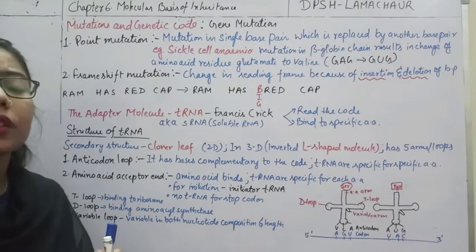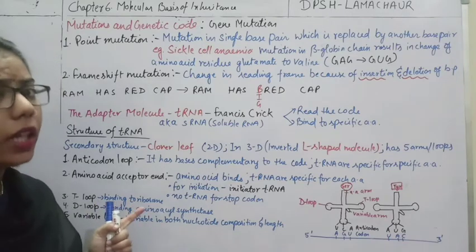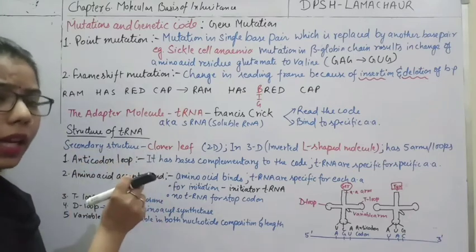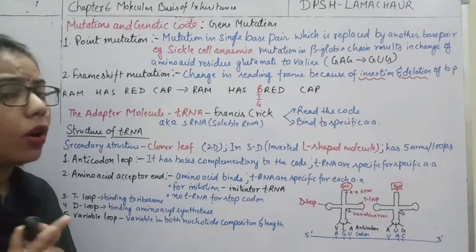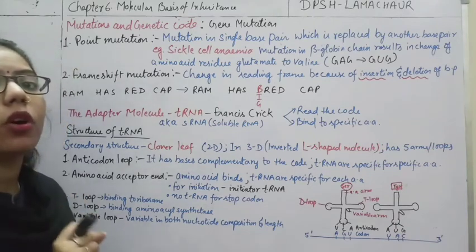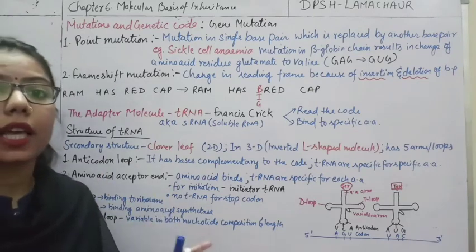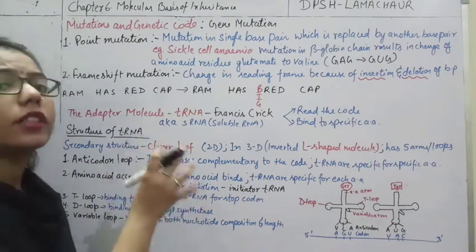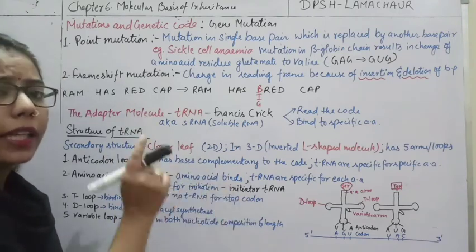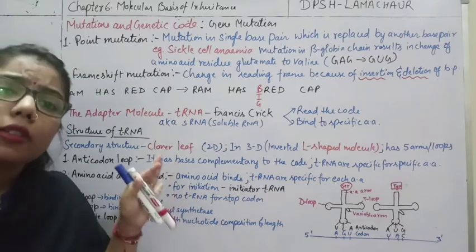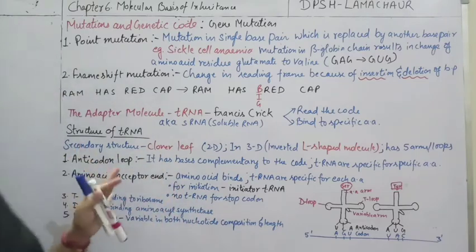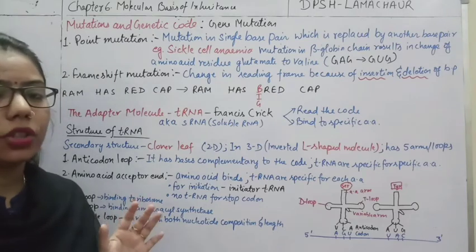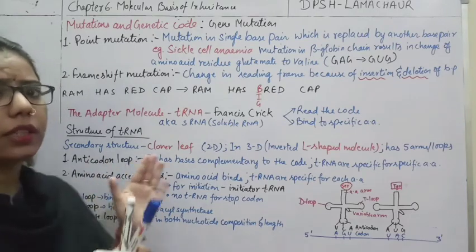We will understand about mutation and the genetic code. In the genetic code, there is a proper sequencing. If there is any change in any nucleotide in the mRNA, it will lead to mutation. Mutation is a sudden, inheritable change, and due to that there will be changes in the formation of protein. It will not code for the proper amino acids, and ultimately the desired protein will not form. Mutation can be of two types: point mutation and chromosomal mutation.